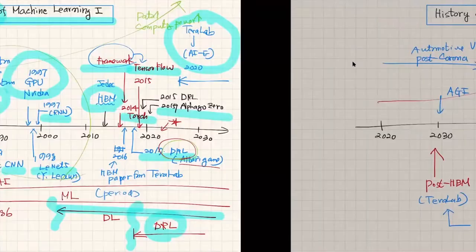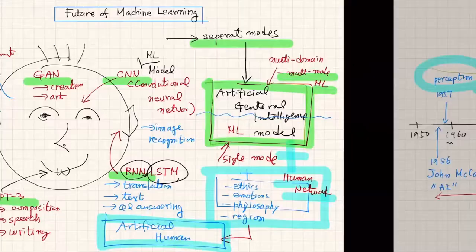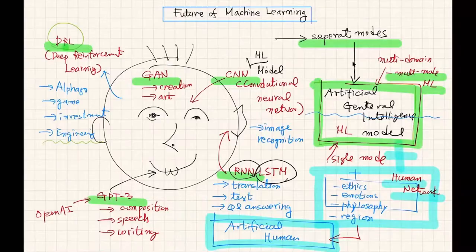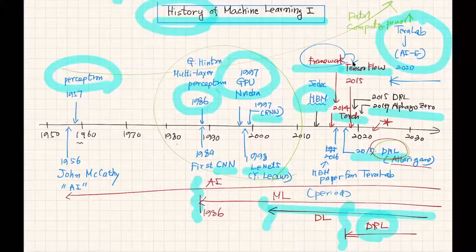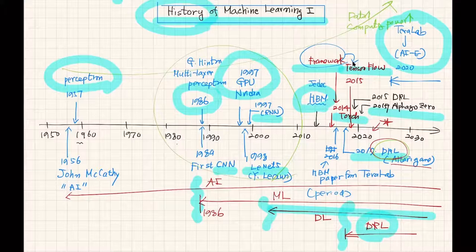Let's go back to the class overview again. I started with the future of machine learning models — CNN, RNN, GPT-3 — and I was talking about the historical view of machine learning. I personally believe these are really important milestones of artificial intelligence, machine learning, deep learning, and deep reinforcement learning. Our class is somewhere in the middle of this timeline.